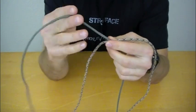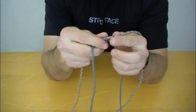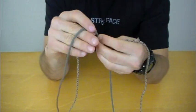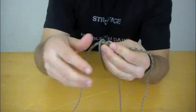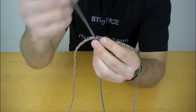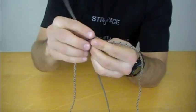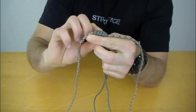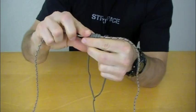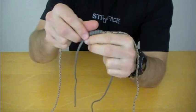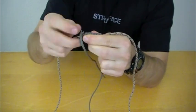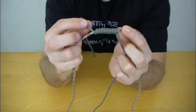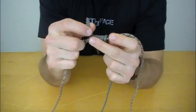So eight wraps of the right side around the left, eight wraps of the left side around the right. So let's go ahead and start with the right side here and make our eight wraps. All right, there's eight on that side.